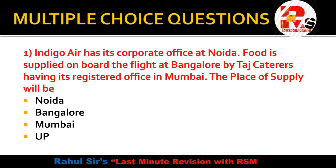Indigo Air has its corporate office at Noida. Food was supplied on board the flight — boarded at Bangalore. As per Section 10(1)(e), the place where boarding of the flight happened is considered the place of supply. So in this case, food is supplied on board the flight at Bangalore, therefore Bangalore will be the place of supply.